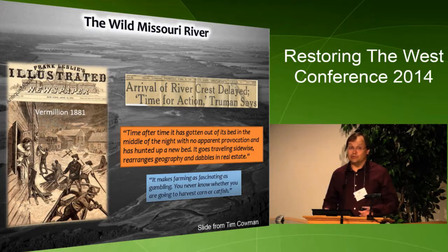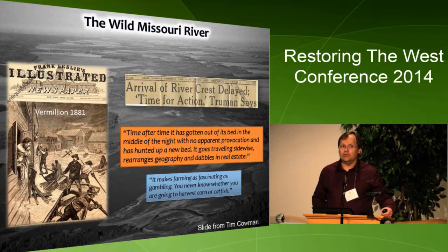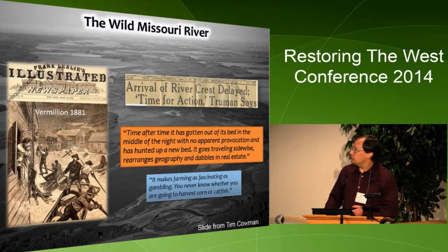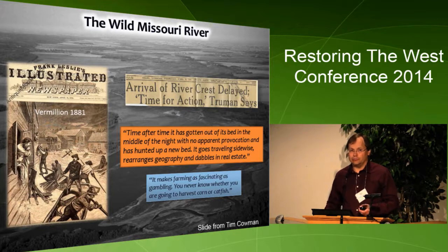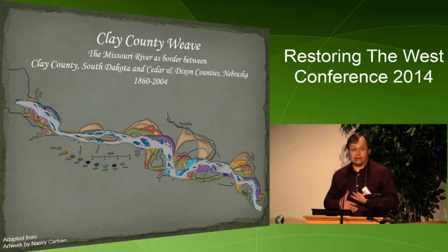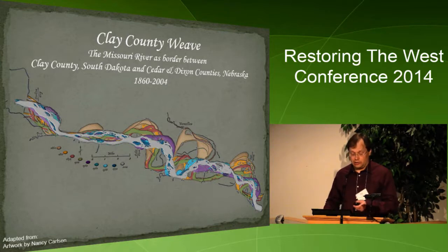The Missouri was once a wild river with big floods, high sediment loads, and moving channels. This magazine cover picture is from my town, Vermillion, South Dakota in 1881, when a flood destroyed three quarters of the town. This dynamic river with channel migration, meandering, channel abandonment, and various other processes definitely helped to make its riparian landscape.